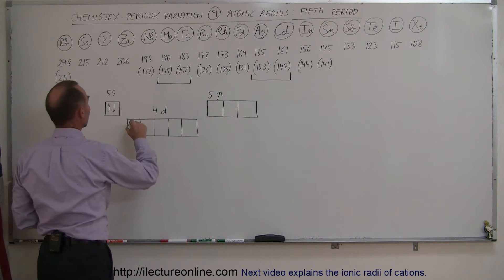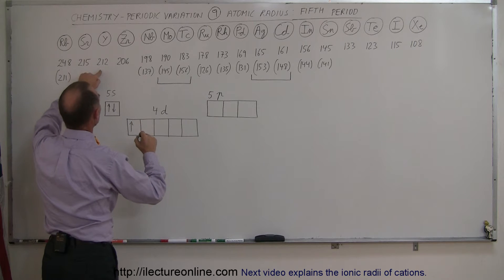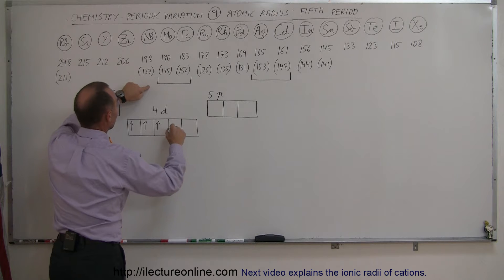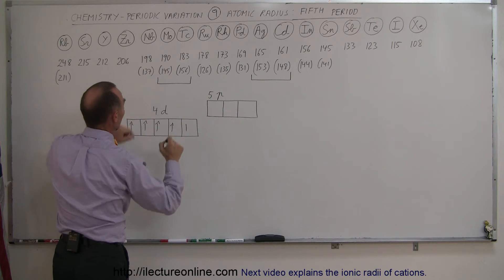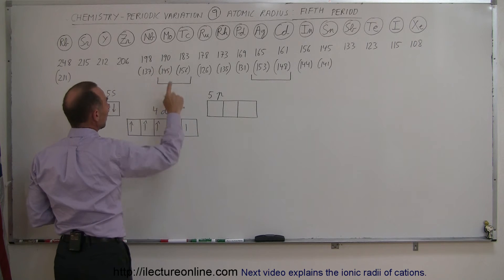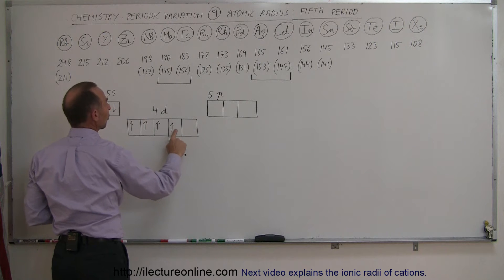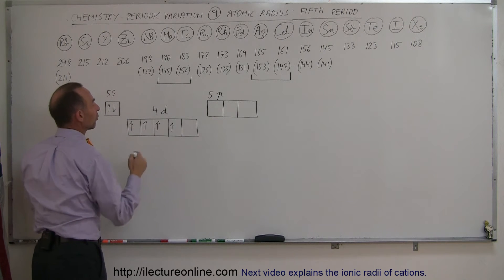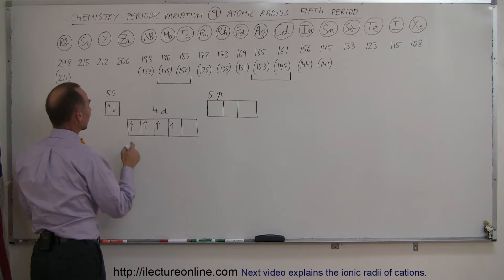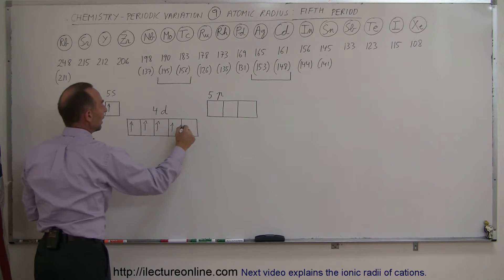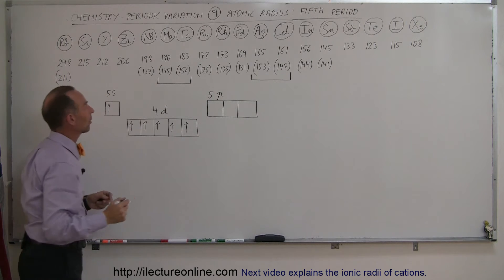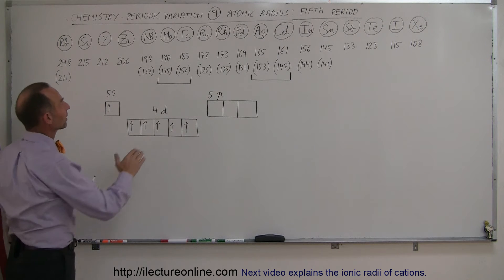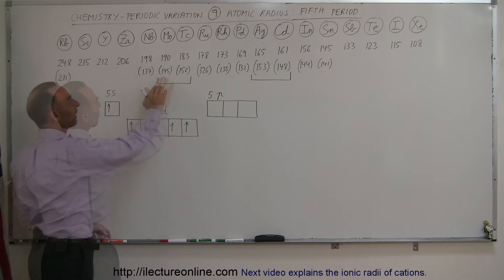Now we start filling in the electrons in the 4d orbitals — for yttrium, zirconium, niobium, molybdenum, and technetium. When the fourth slot in the 4d orbitals gets filled, this electron will come in and fill up the fifth slot right there.